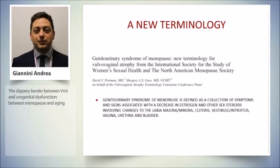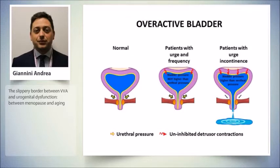We can summarize all these symptoms and anatomical changes under a new terminology: the Genitourinary Syndrome of Menopause (GSM). The GSM is defined as the constellation of symptoms and signs associated with a decrease in estrogen and other sex steroids, involving changes to the labia minora, clitoris, vestibule, introitus, vagina, urethra, and bladder.